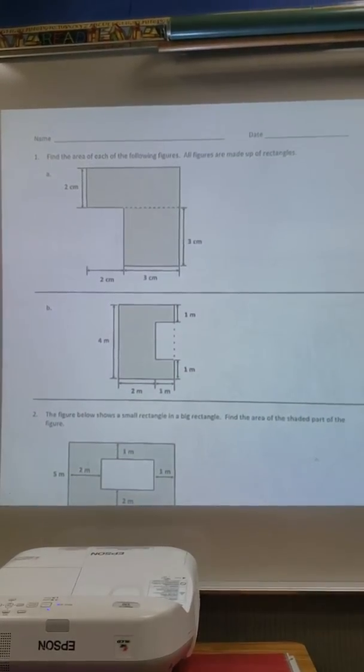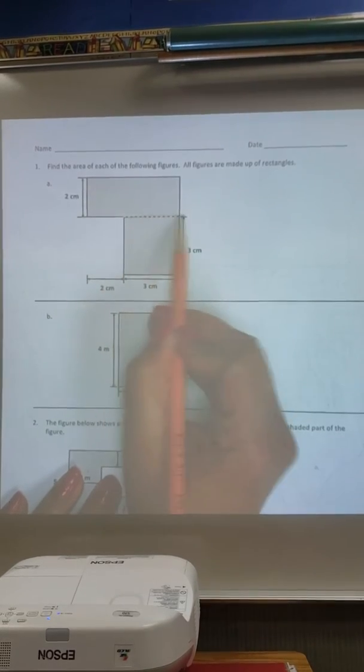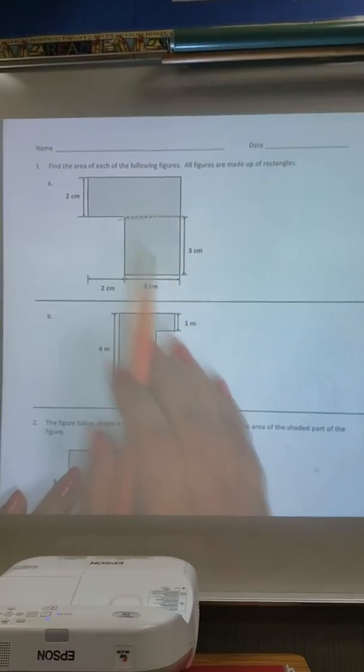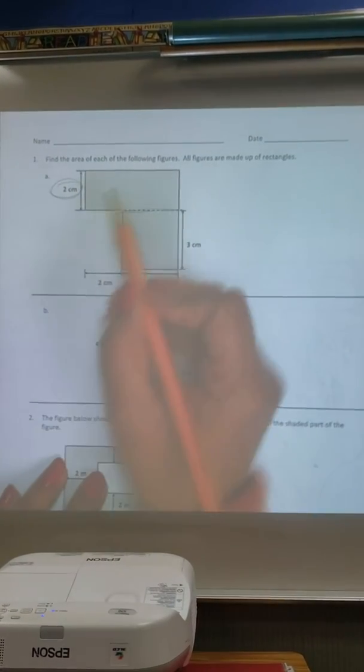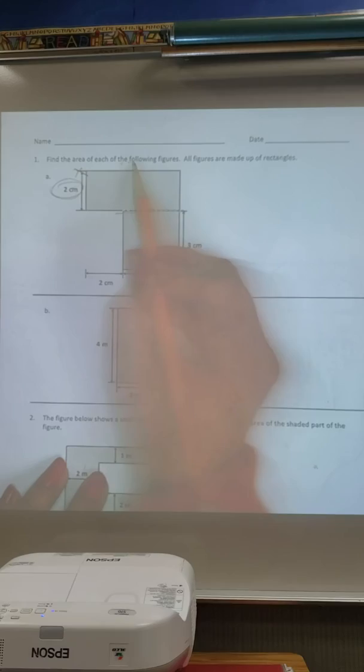So let's try that for these two. They've actually split this up for us. We have this up here and this down here. I've got one side measurement, but I don't have a side measurement here, so I cannot multiply anything until I figure this out.